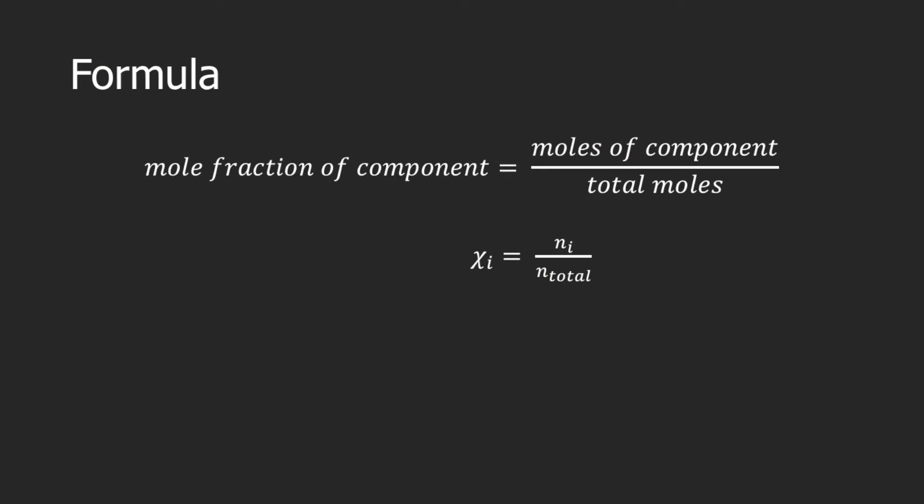So let's proceed right away to the formula. The mole fraction of a component is equal to the moles of the component divided by the total moles. Or in symbols, chi i is equal to n i divided by n total. The Greek letter chi is the symbol for mole fraction, and n is the symbol for moles.